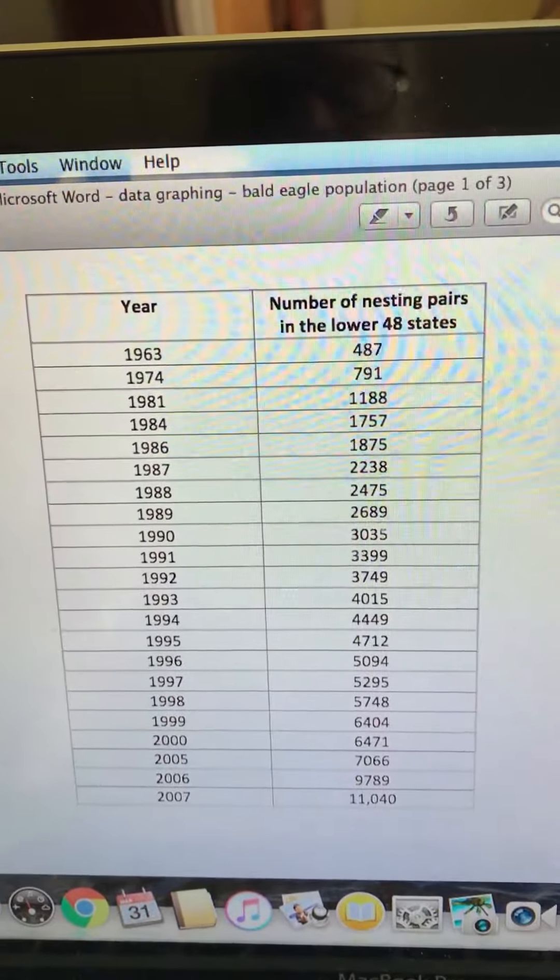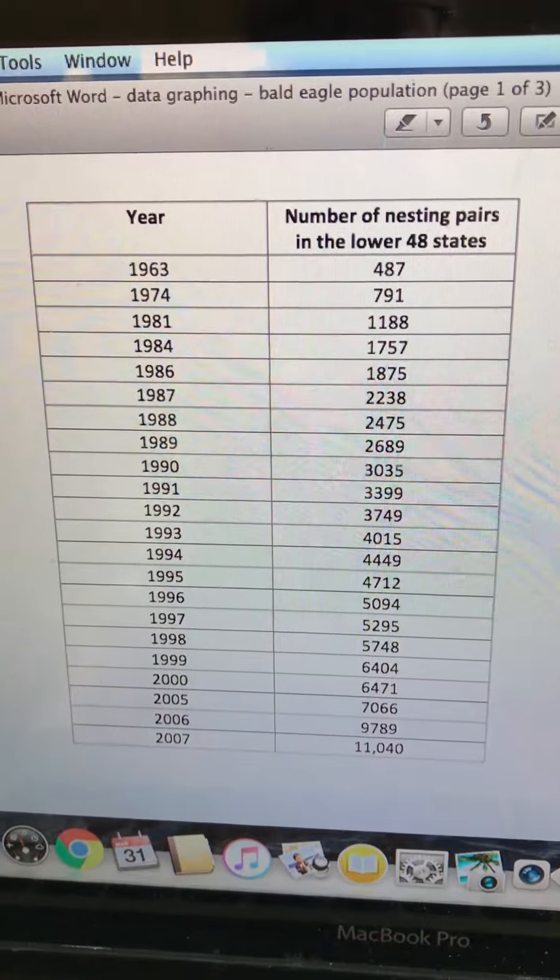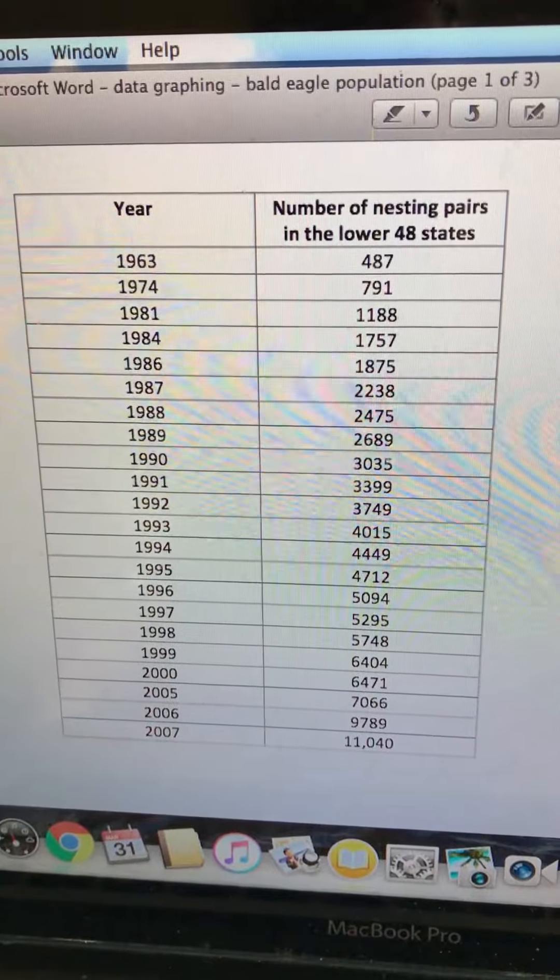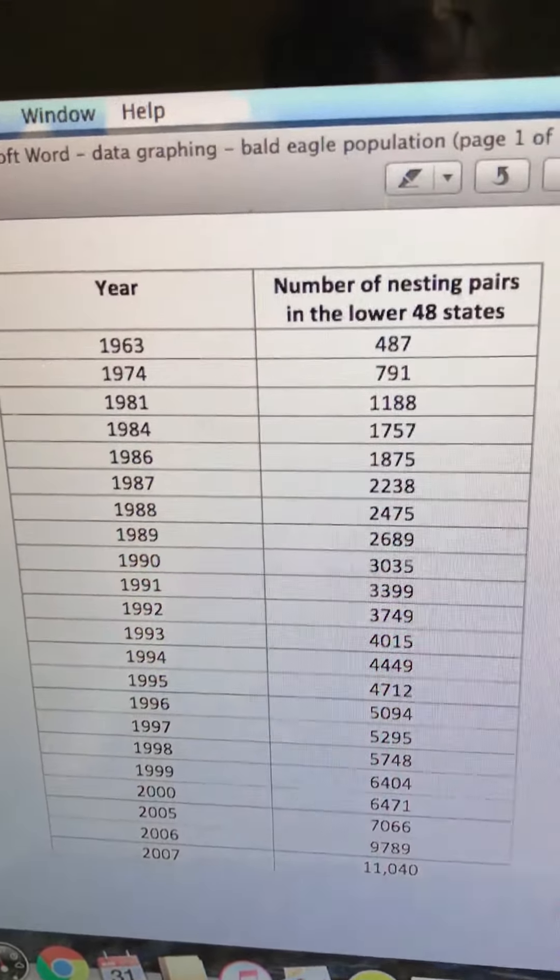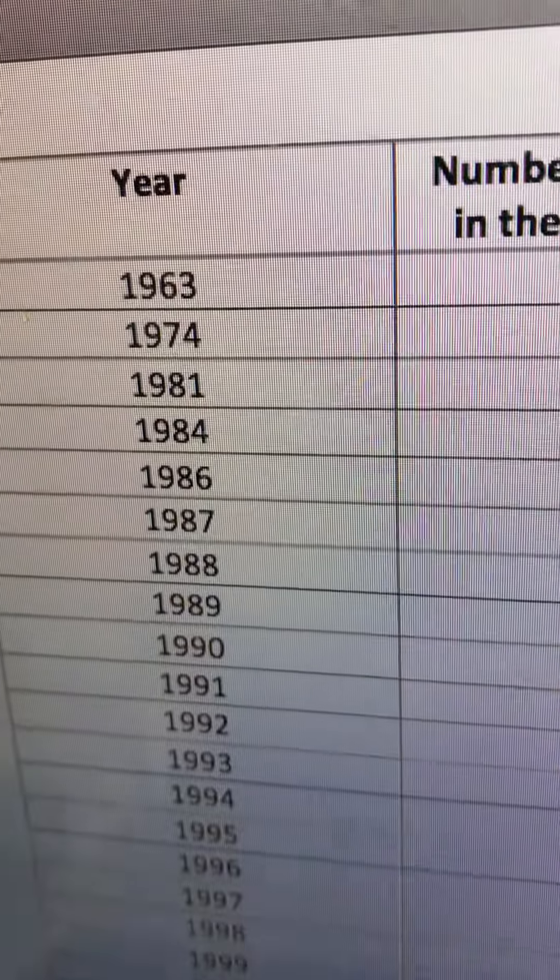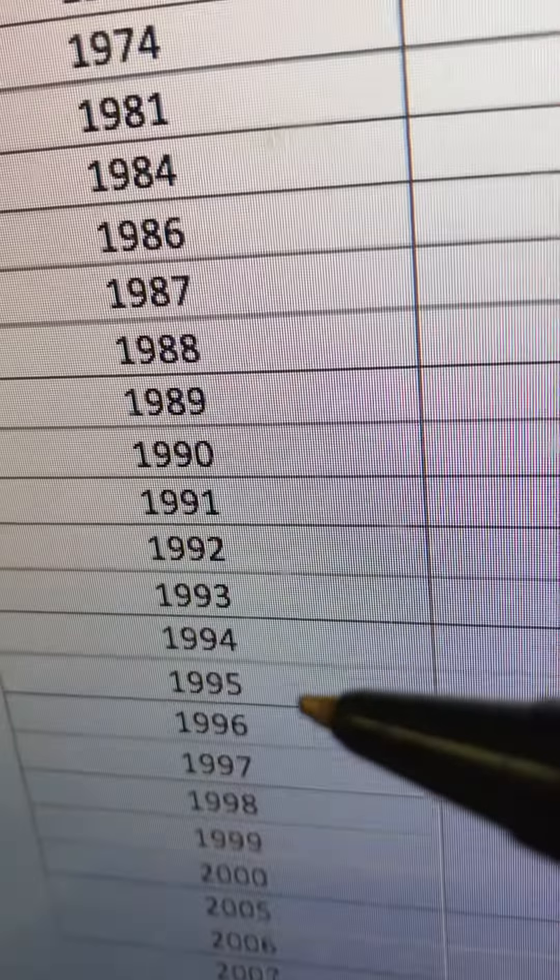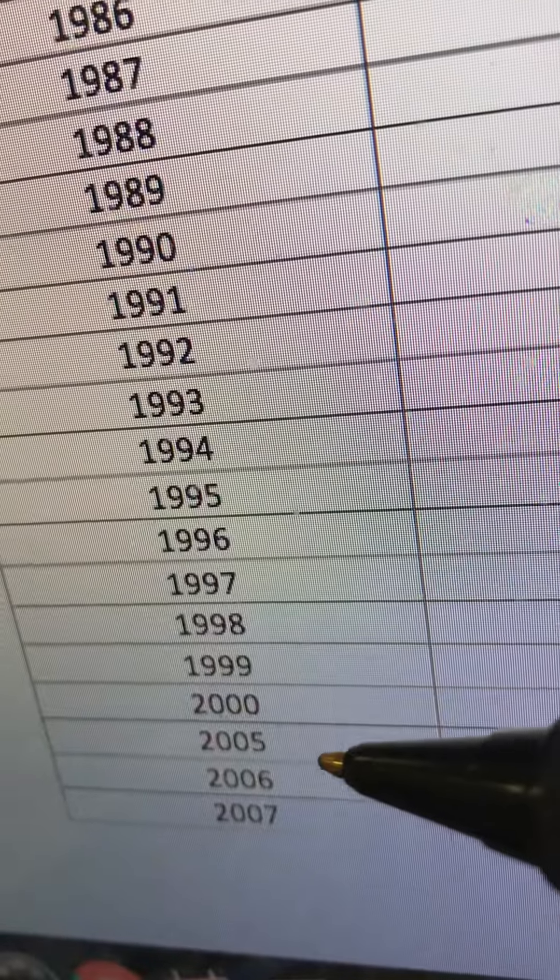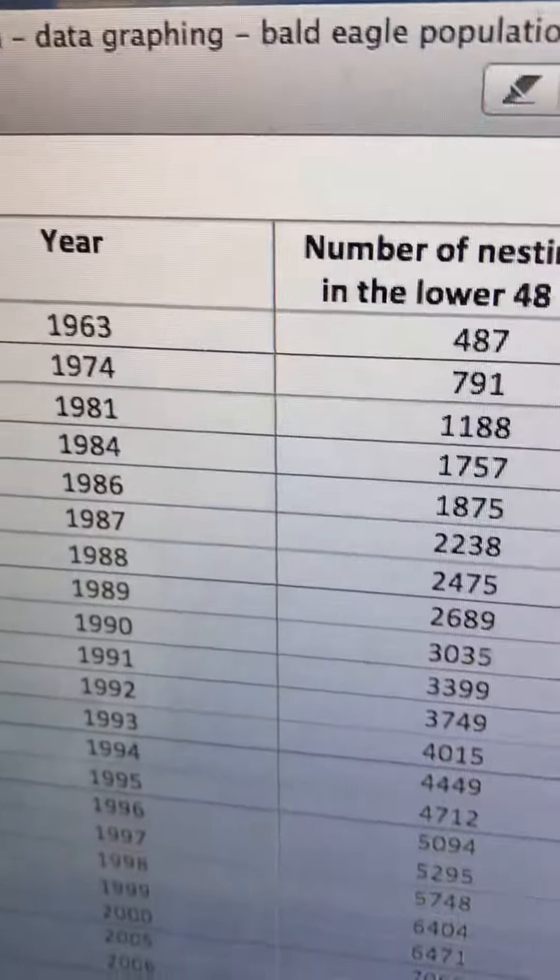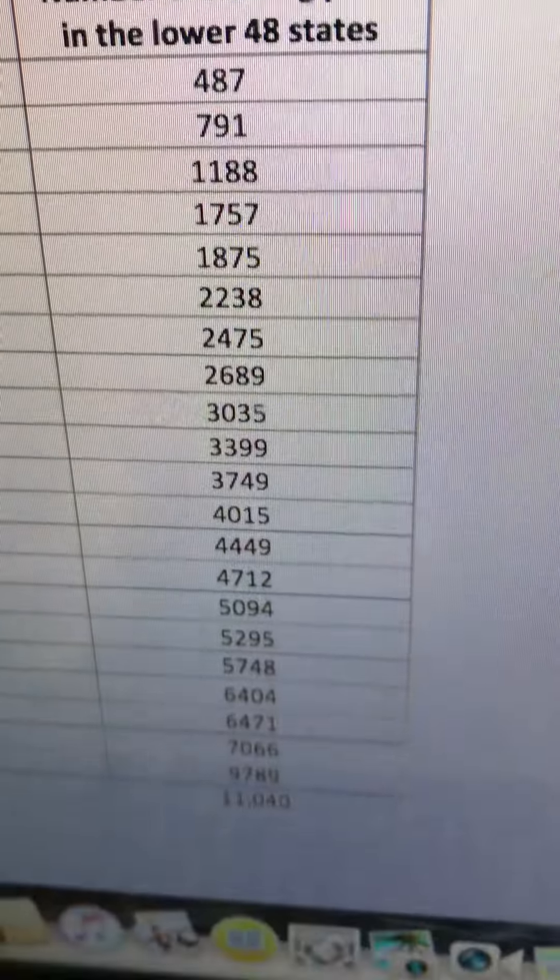So your parents are going to get some information from me in their email that's going to have some charts and this shows the number of nesting pairs of eagles in the lower 48 states. It goes from the year 1963 and it doesn't follow every single year. There's not data for every year. So what it does go down to is 2007 this particular chart. So we're going to do at least a partial chart just to show how the population of nesting pairs of eagles has changed over time.